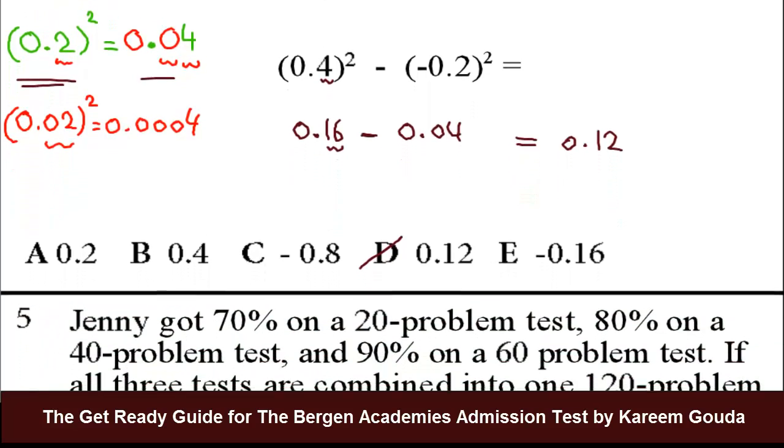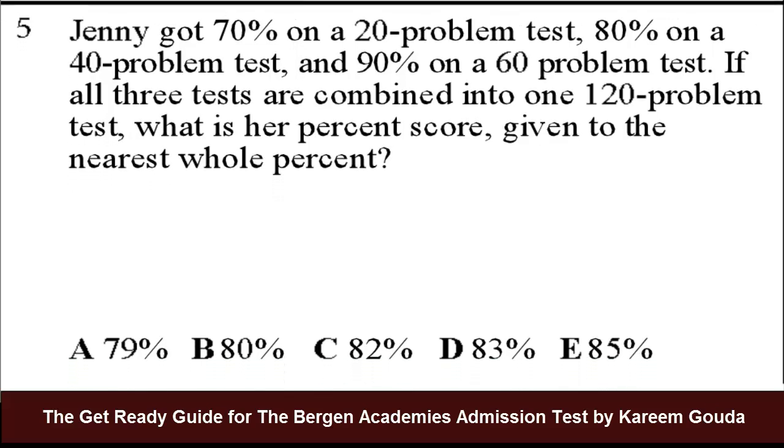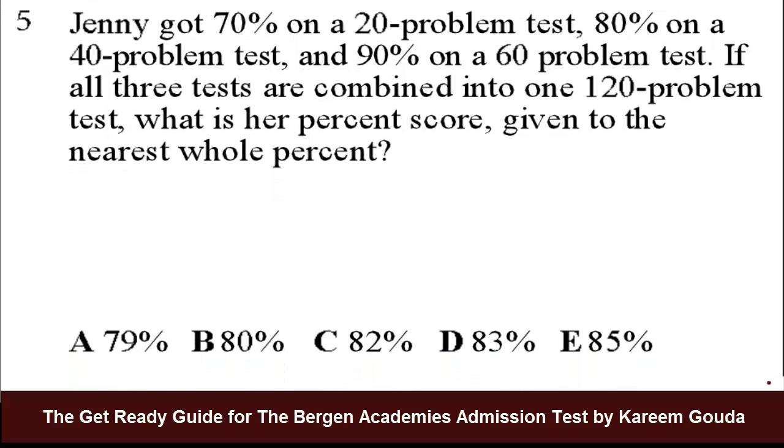Number 5. Jenny got 70% on a 20 problem test, 80% on a 40 problem test, and 90% on a 60 problem test. If all three tests are combined into one 120 problem test, what is her percent score given to the nearest whole percent?